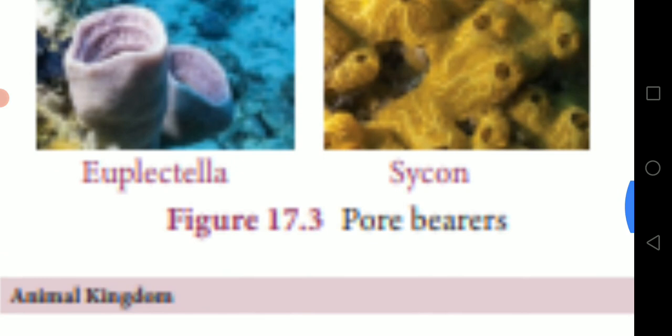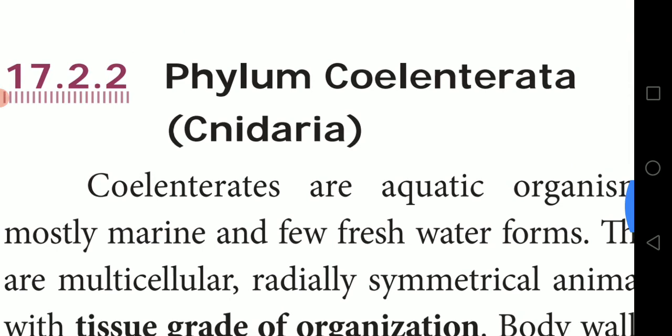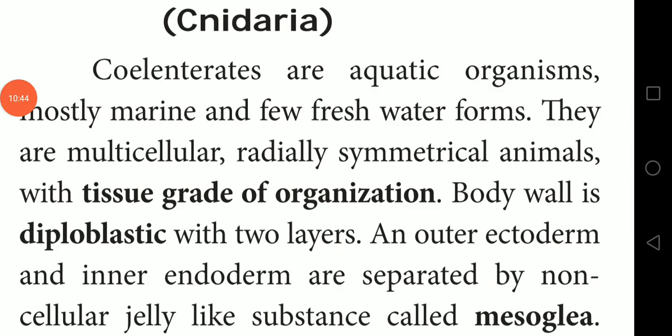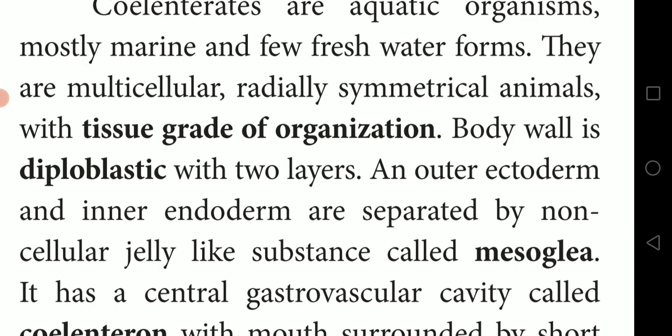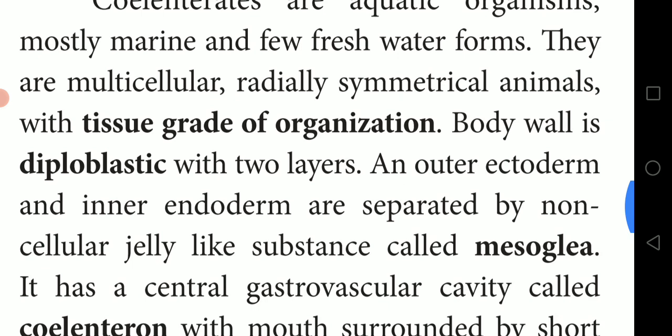The next phylum is Phylum Coelenterata, also called Cnidaria. The coelenterates are aquatic organisms, mostly marine — meaning they live in salty water — though a few may live in fresh water forms as well. They are multicellular animals.